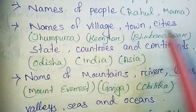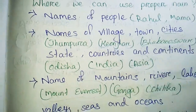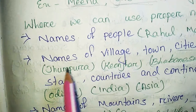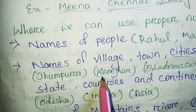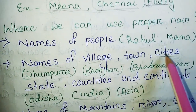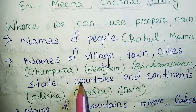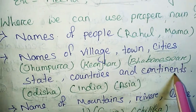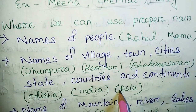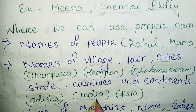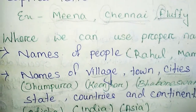Names of village, town, city, state, countries, and continent. Here Jhumpurra is an example of village, and Keunshar is an example of town. Bhumnesor is an example of city. Odisha is an example of state. India is an example of country. Asia is an example of continent. These are all names — Jhumpurra, Keunshar, Bhumnesor, Odisha, India, Asia — and these are all proper nouns.